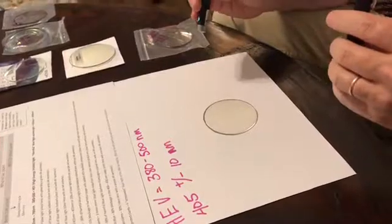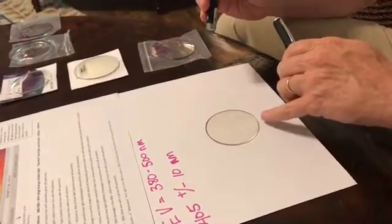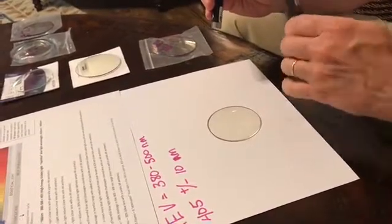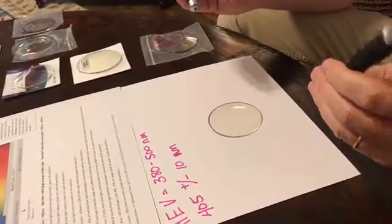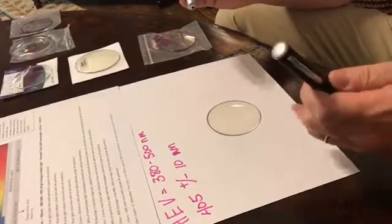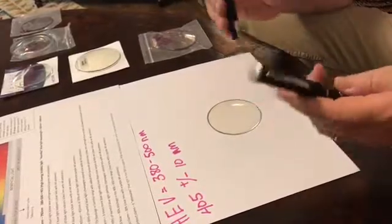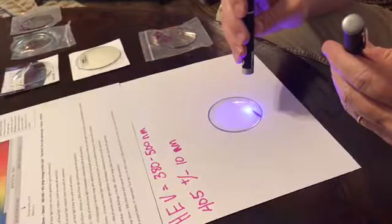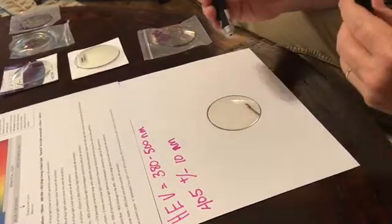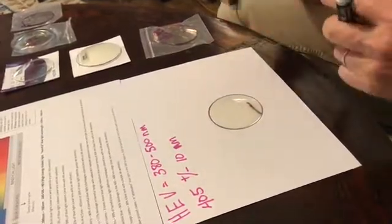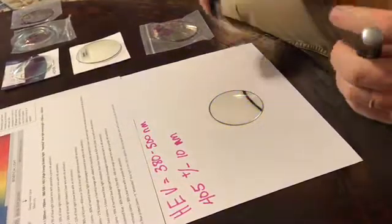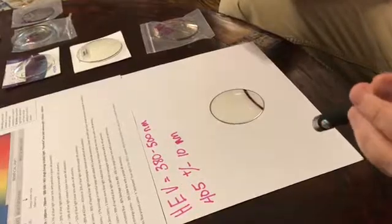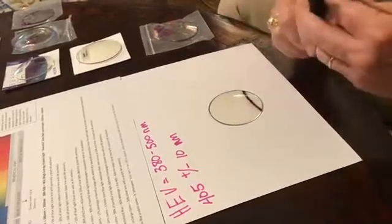All right. First thing we have here is our two blue light pins. So here's the HEV pin, and we have this Transitions Signature 7 blank. All right. So let's see what the blue light does. If it has UV in it, which it should, it will activate the Transitions lens. So here we go. That's the HEV pin, and here's my 405 pin right here. So as you can see, both pins activated right there.